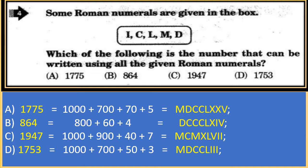Some Roman numerals are given in the box. Which of the following is the number that can be written using all the given Roman numerals? Solving option A, 1775: 1000 + 700 + 70 + 5. In Roman numerals: M (1000), DCC (700), LXX (70), V (5). For option B, 864: 800 + 60 + 4. Roman numerals: DCCC (800), LX (60), IV (4).